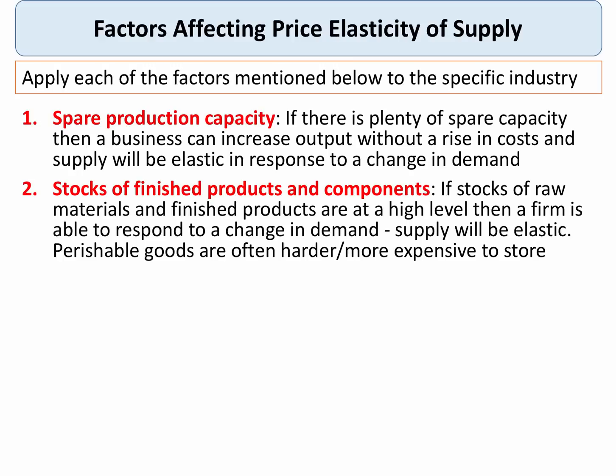The second factor is the level of stocks of finished products and also component parts. The basic rule is that if stocks of raw materials and finished goods are at a high level, then the firm can quite easily respond to a change in demand and supply will be price elastic. Conversely, when stocks are low, dwindling supplies often force prices higher because of scarcity. The costs of storage have to be borne in mind here, and perishable goods are often harder and certainly more costly to store.